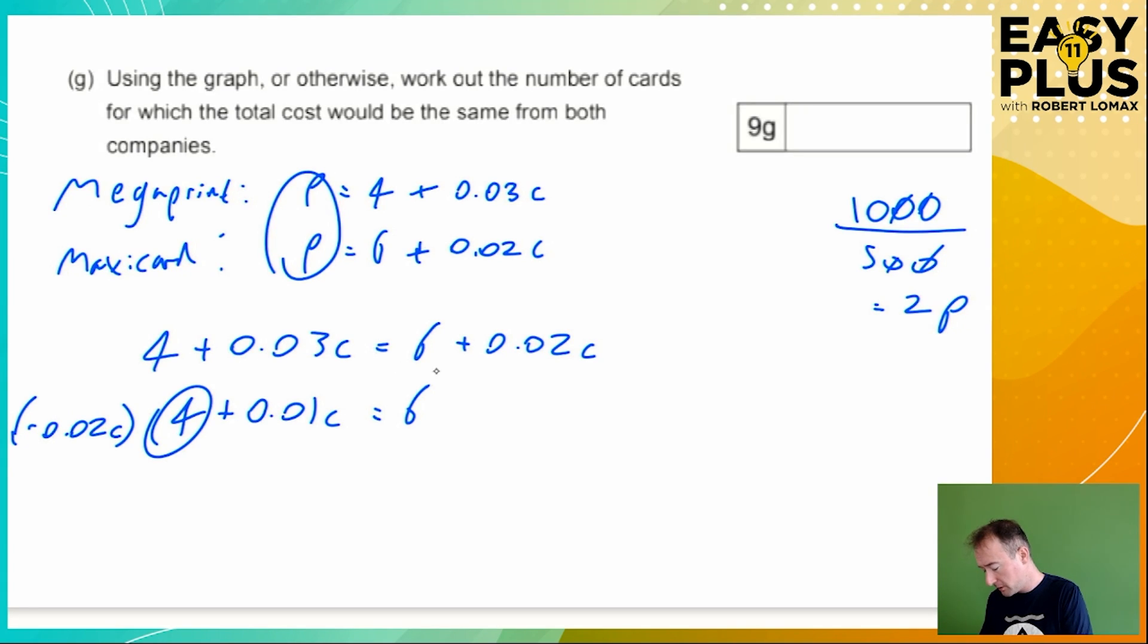But now we've got numbers on both sides. And it'd be much easier if they were all on one side if we had a number of c's equals a number of numbers. So how do we get rid of this four here? How do you get rid of a plus four? You take away four. You always do the opposite when you're solving equations. To get rid of something, you do the opposite. If something's added and you want to get rid of it, you minus it. That's what we're doing here. So minus four. Everything you do, you always do to both sides. So take away four from this side, that's going to disappear. So we're just left with 0.01c. Equals six minus four, which is two.